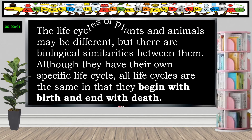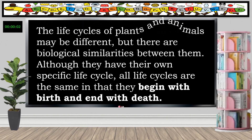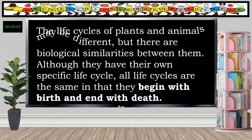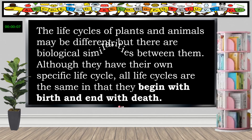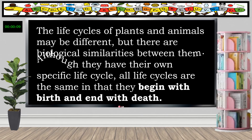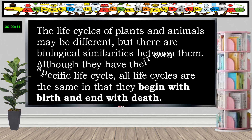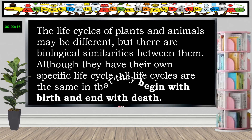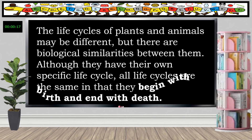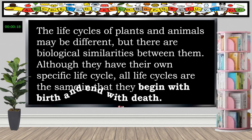The life cycles of plants and animals may be different, but there are biological similarities between them. Although they have their own specific life cycle, all life cycles are the same in that they begin with birth and end with death.